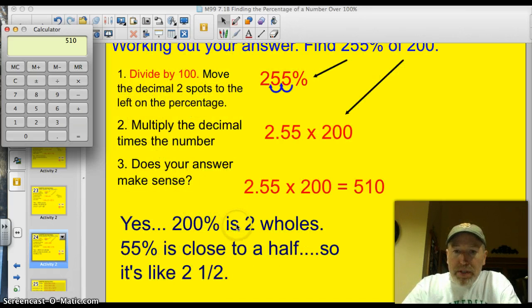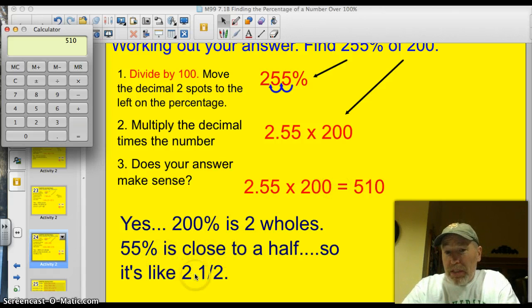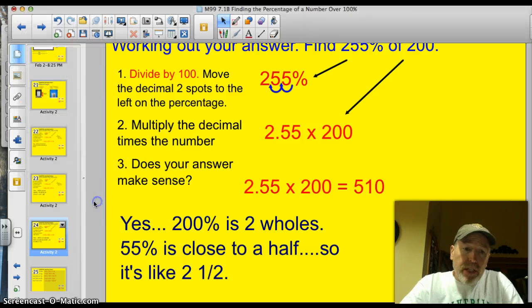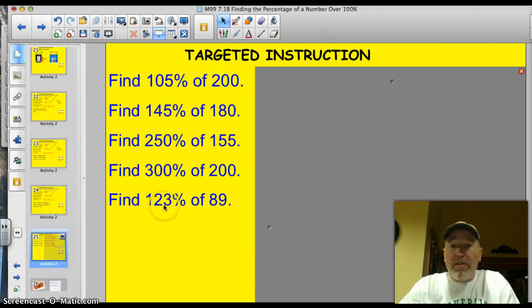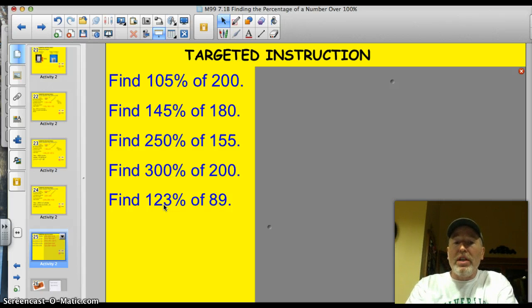Does the answer make sense? Yes. 200% is two wholes, which would be 400. And 55 is close to a half. So, it's kind of like 2 and 1 half times 200. Yeah. So, 510 makes sense. Alright. Here are some examples I'd like you to work through before we get to the Ticket out the Show. Go ahead and pause the video. Grab your calculators. Work these answers.